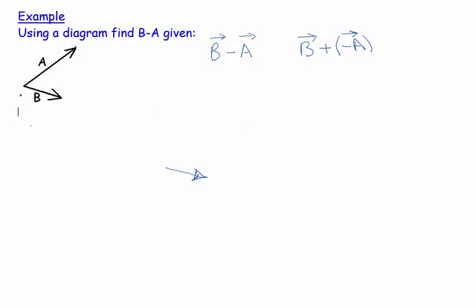This is minus A. So let's add on minus A. I have a vector going in that direction. If this is vector B, this is vector minus A, this is the process of addition.